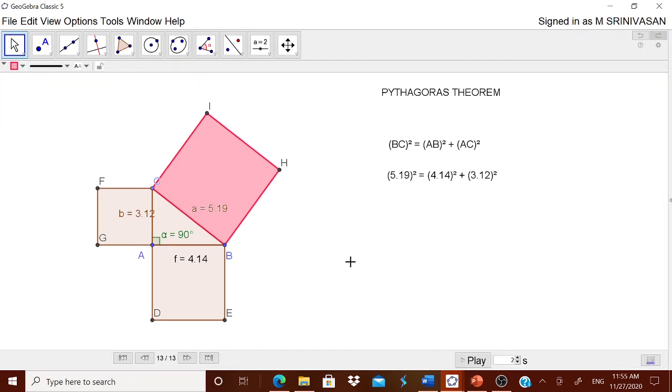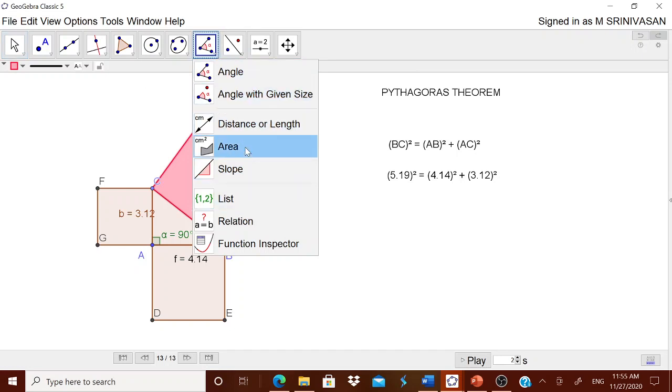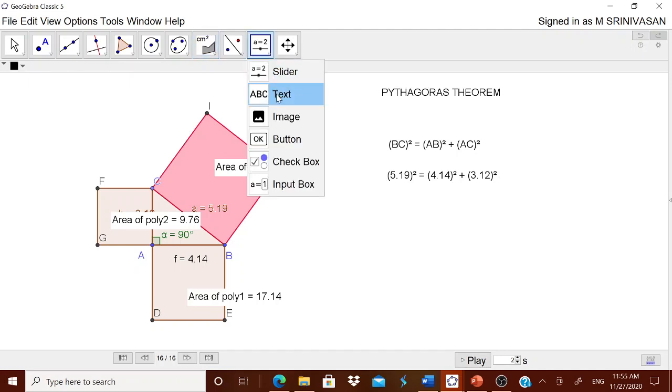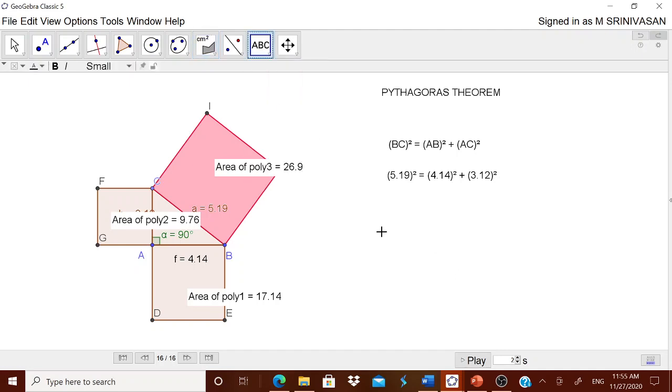Now how to get the value. Now it is very simple. GeoGebra is giving me a very fantastic idea. That is actually nothing but the area. Therefore first touch this, this area, touch this area. Therefore now 17.14 plus 9.76 is equal to 26.9. It's a very simple one. I think we can put it here.